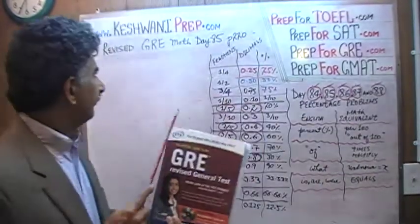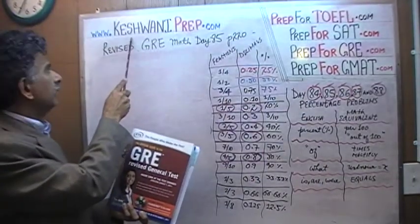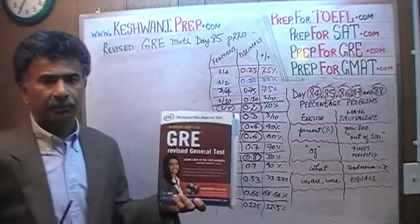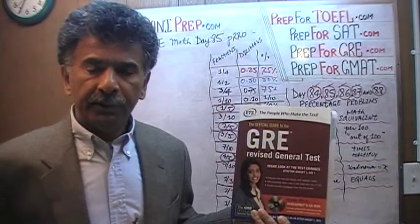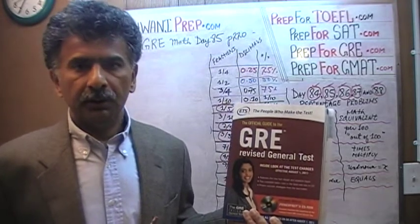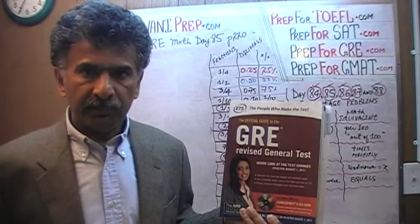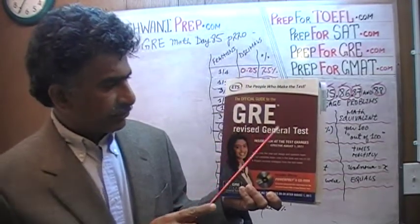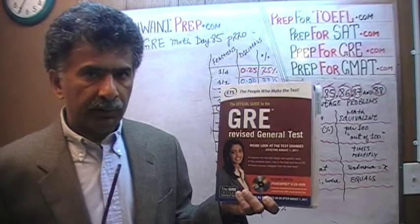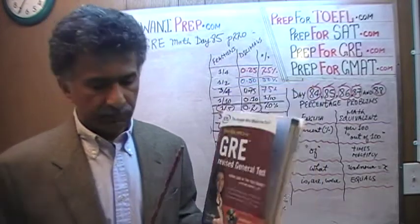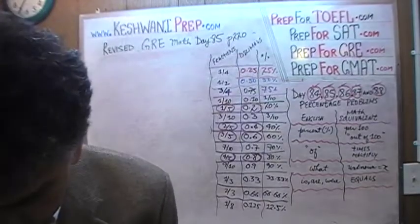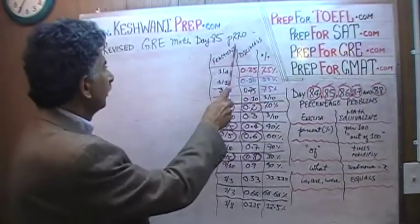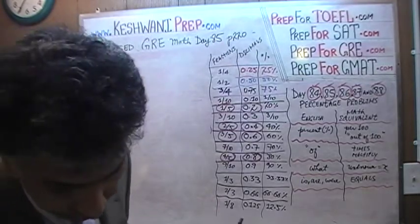Hello, my name is Keshwani — K-E-S-H-W-A-N-I. We are here because we want to prepare for the GRE. We have been solving GRE math problems out of this book, the Official Guide to the GRE: The Revised General Test. If you do not own this book already, purchase it immediately — you are going to need it. The problems we are about to solve are on page 220, and today is lesson number 86.